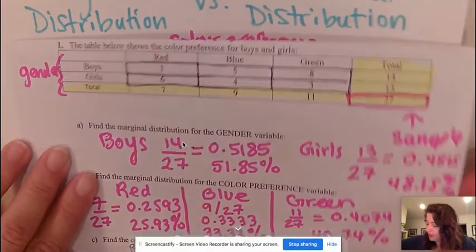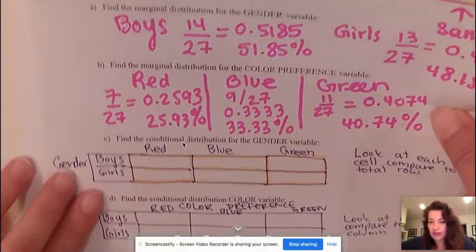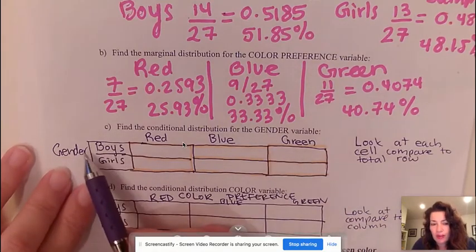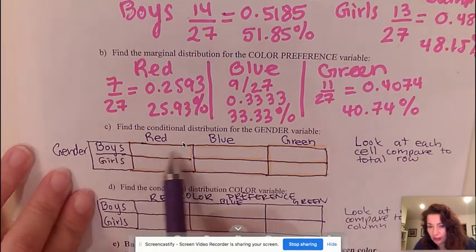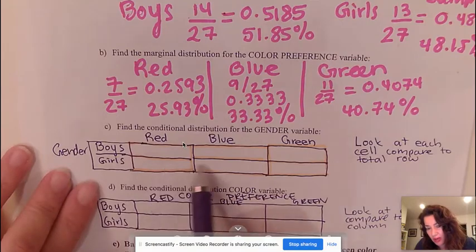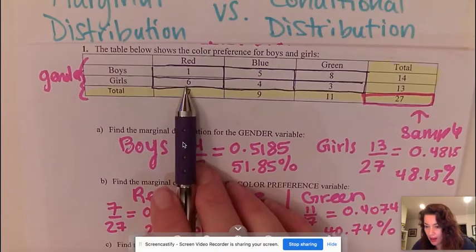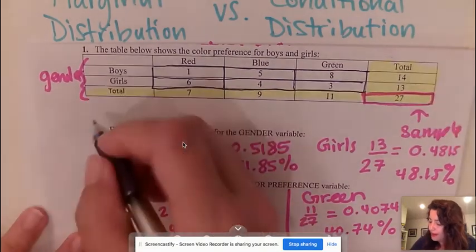So I recreated here and it says find the conditional distribution for gender. If you remember, gender is looking at the rows, so I basically just recreated my cells which are empty. What we have here by the way are counts.